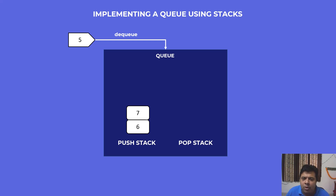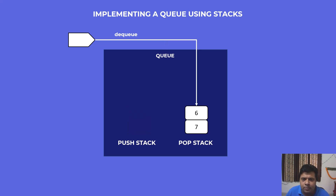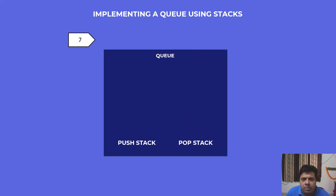Now our pop stack is empty and we receive another dequeue request. We check — the pop stack is empty — so any remaining elements must be in the push stack. However, those elements in the push stack are not in the correct order, so as before we move them to the pop stack: we move element 7, then element 6, and now we can dequeue element 6 — which is the correct insertion order. We receive another dequeue request and return element 7. So we solved this complex-looking problem using two stacks. The full code is available in the GitHub link in the comment section below.